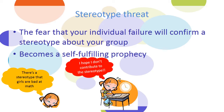Rather than being able to relax and devote all of her attention to the test, some of her cognitive capabilities are being bound up by the stress of confirming the stereotype. She ends up not doing well because she's so concerned about not fulfilling the stereotype that she can't apply all of her mental abilities. People who are members of groups with negative performance stereotypes perform worse when the evaluator knows about the stereotype than when the evaluator doesn't know the stereotype or doesn't know which group they fall into.